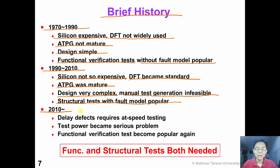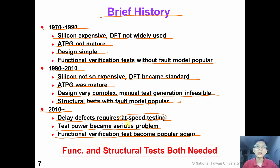However, as technology kept shrinking to nanometer technology, delay defects became more and more prevalent. To detect delay defects, we require speed testing. Also, test power has become a serious problem, so people were trying to reduce test power. Because of these reasons, functional verification test has become popular again. From this history, we can see that both functional tests and structural tests are actually very important and are both needed in production tests.